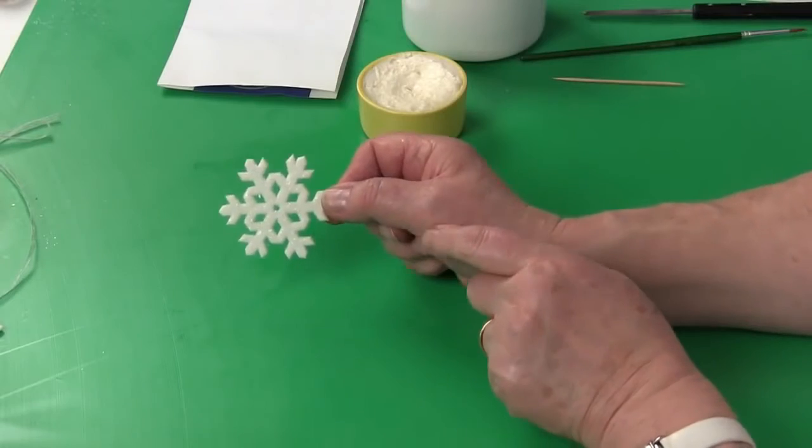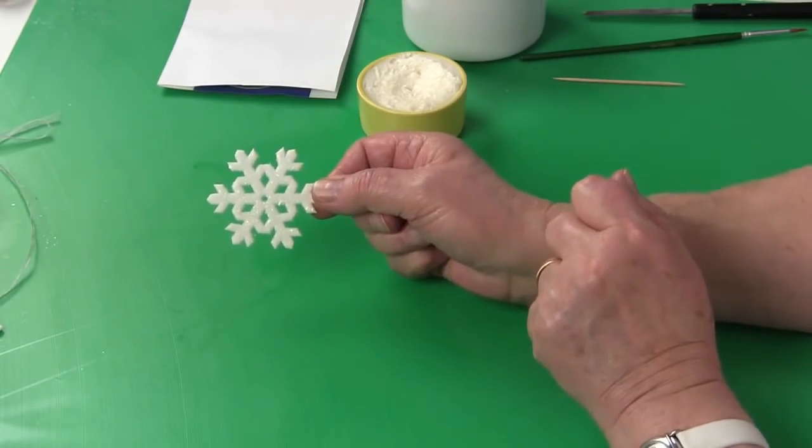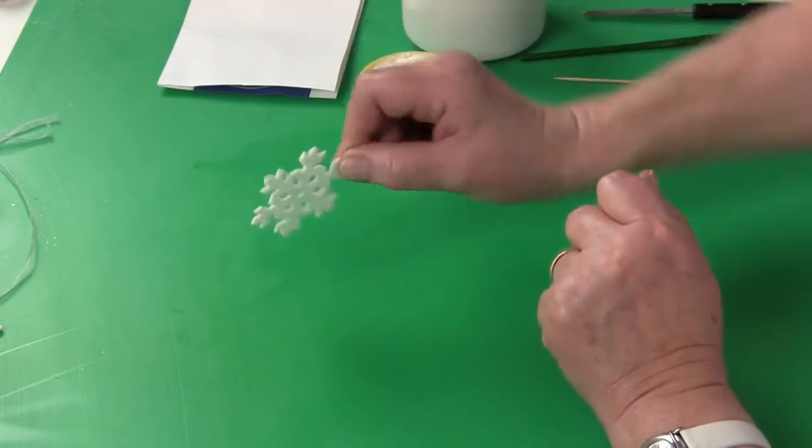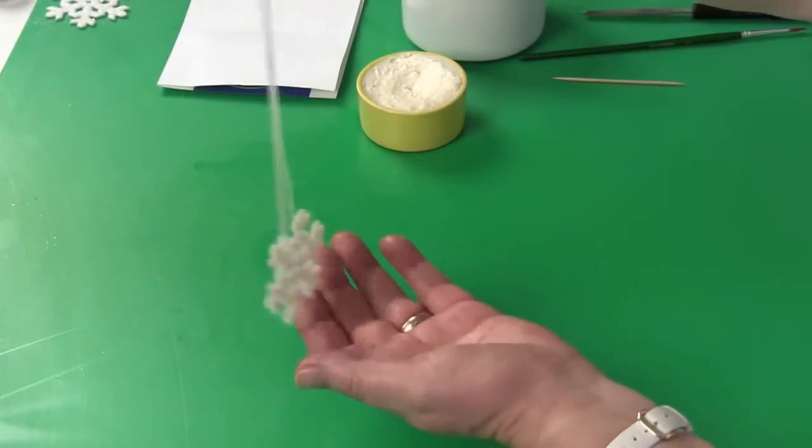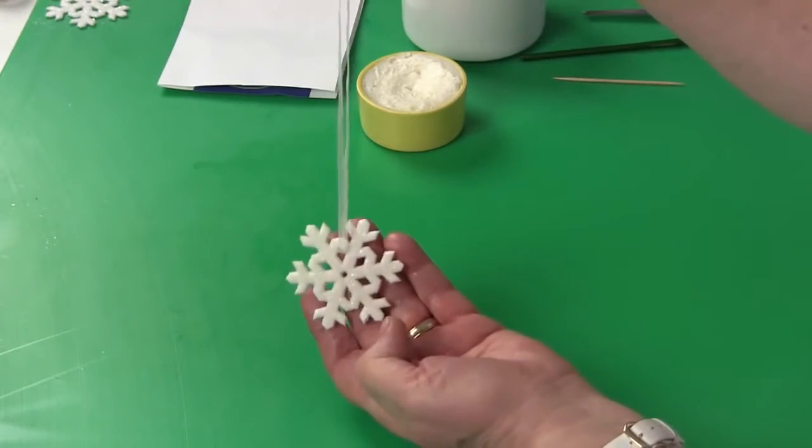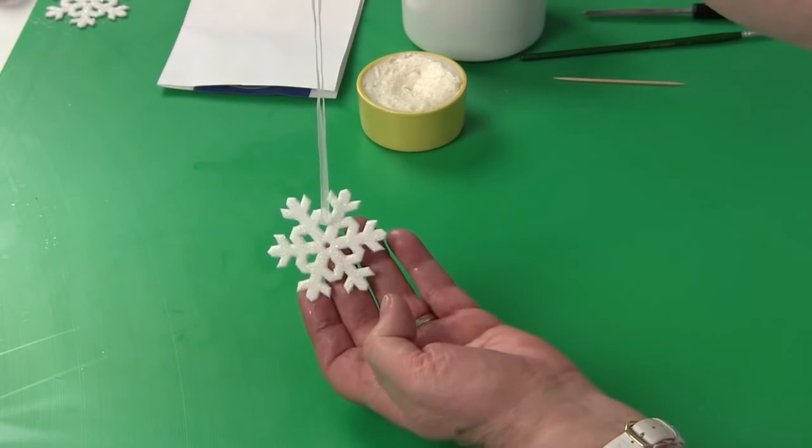You can also leave the snowflake to dry and put magic sparkle on both sides, and then hang fine ribbon through the snowflake and hang them on your Christmas tree.